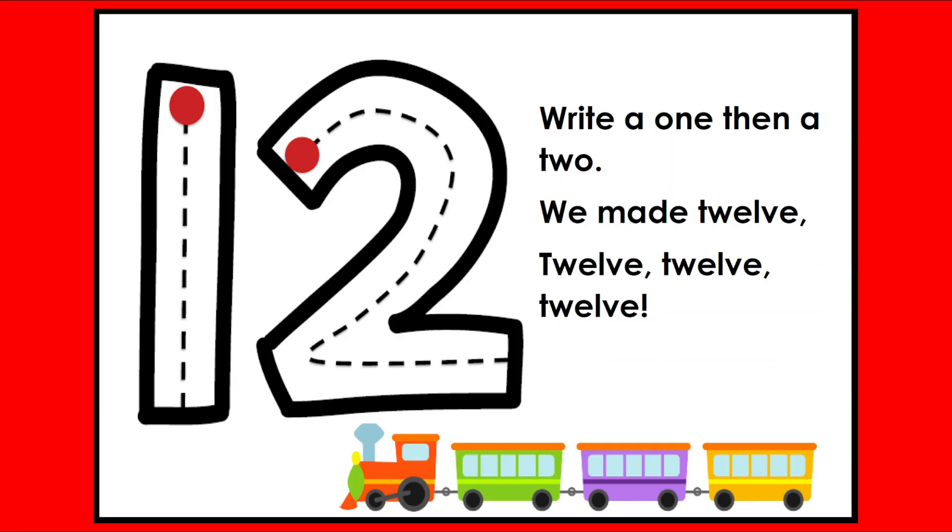Now we're gonna turn on our magic writing fingers and we're going to make a number 12 in the air. So first we write a 1, straight line down, whoop, and then we're going to make a number 2. So we jump back up to the top line, we curve around and back. So we write a 1, then a 2. We made a 12.